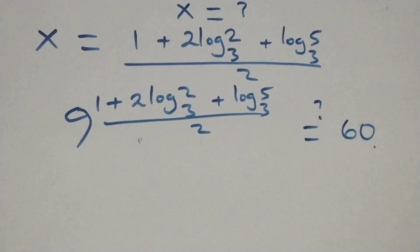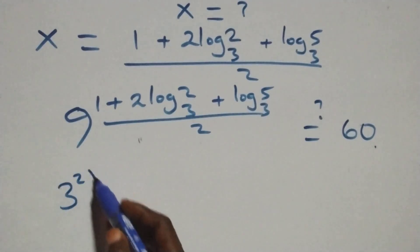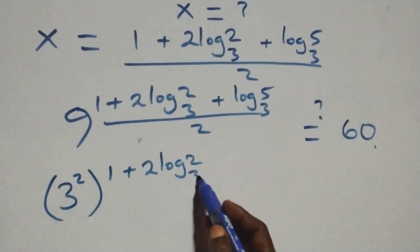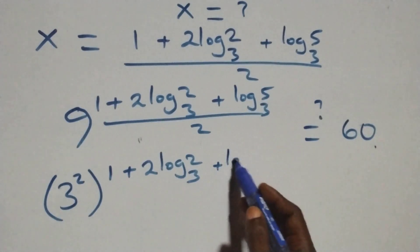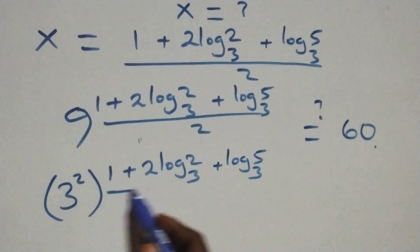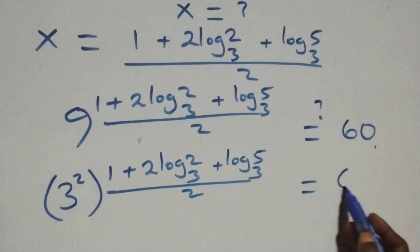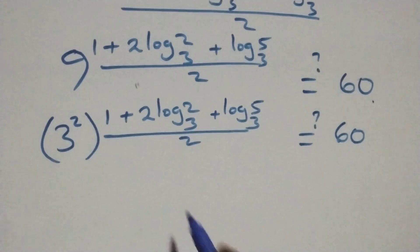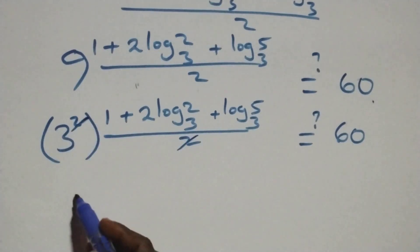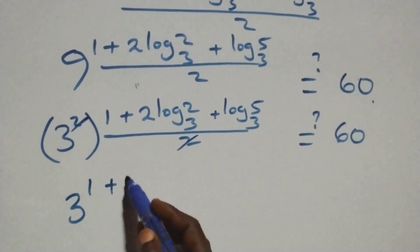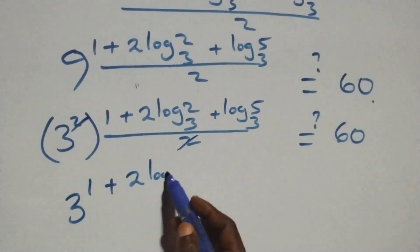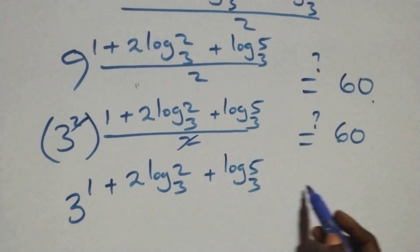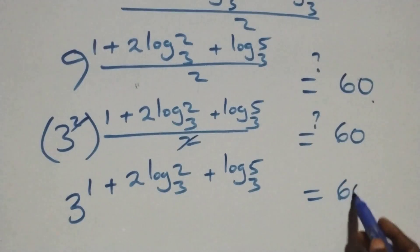We write 9 as 3 squared, raised to the power (1 plus 2·log₃2 plus log₃5, all over 2), equals 60. The 2 from the exponent of 3 squared and the 2 in the denominator cancel each other, giving 3 raised to the power (1 plus 2·log₃2 plus log₃5) equals 60.